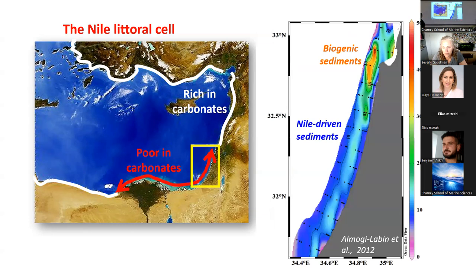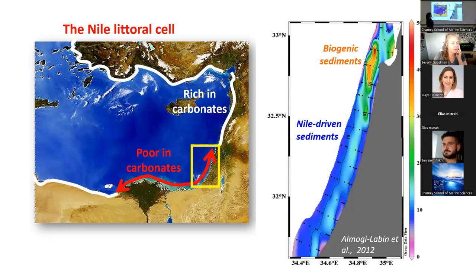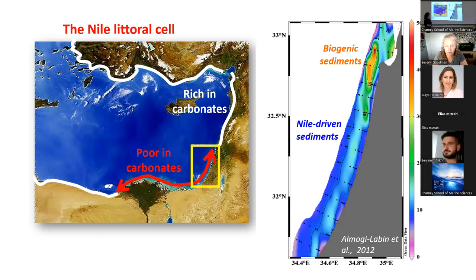We are looking at the Nile Littoral Cell shelf map — the coast of Israel. This is Haifa Bay. The map shows the percent of calcium carbonate. As we go south toward the Nile Delta, the amount of calcium carbonate is reduced, because most of the sediment is made of clastic material derived from the continent and transported along the coast.